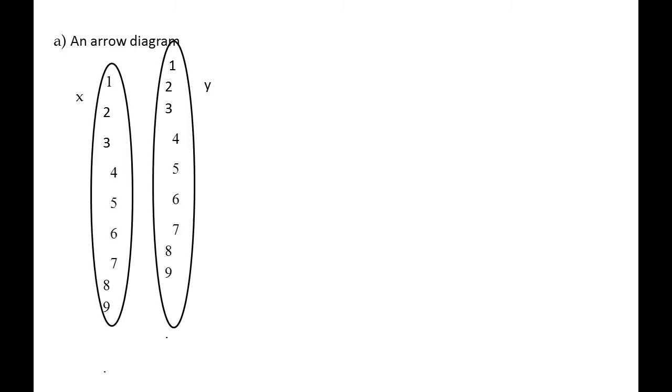Arrow diagram: 1 to 4, 2 to 5, 3 to 6, 4 to 7, 5 to 8, 6 to 9. Next, graph.